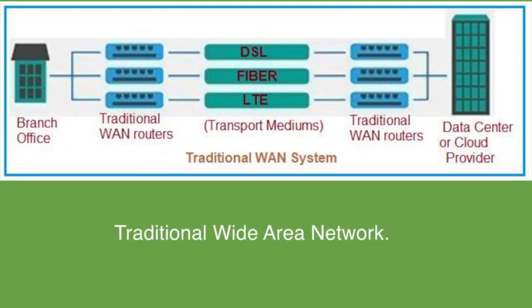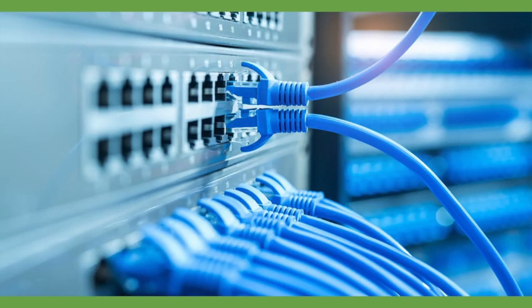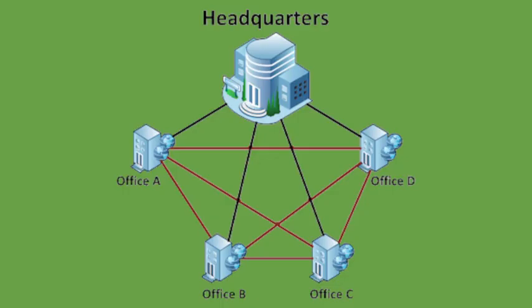What we have now is a traditional WAN — traditional wide area networks — and the difference between that and SD-WAN is, for example, if you were to configure routing policies, you would have to configure routing policies in each branch for your enterprise. It is a manual process, and it is cumbersome and error-prone.